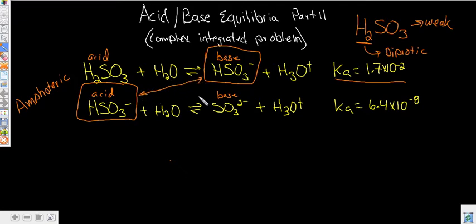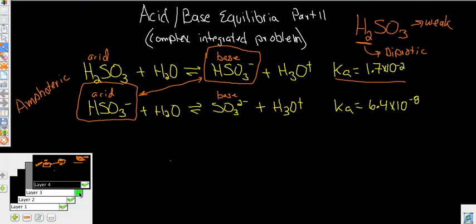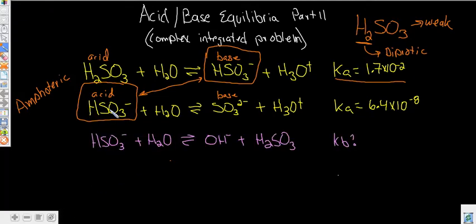So this one right here is amphoteric. So let's go ahead and write out what would the equation look like for this acting as a base. So here is it acting as an acid, and we know the Ka for that, and here is it acting as a base. So the question would be, is it more likely to create a basic solution or an acidic solution? And so that's pretty easy to analyze because all you need to know is what is the Ka of hydrogen sulfite, and what is the Kb? You compare the two, which one is bigger is the one that's more likely to be.